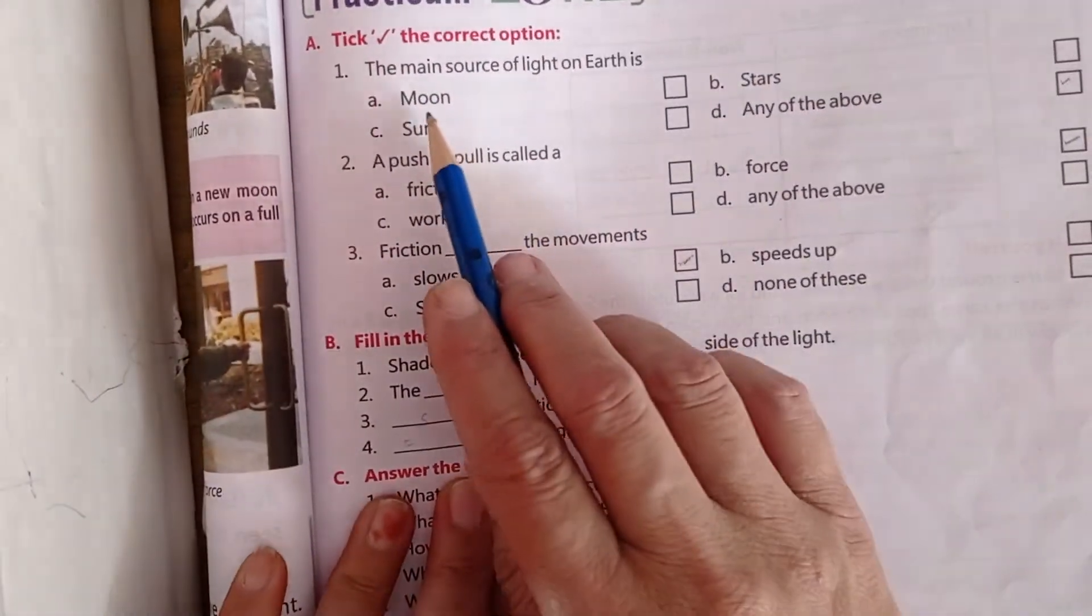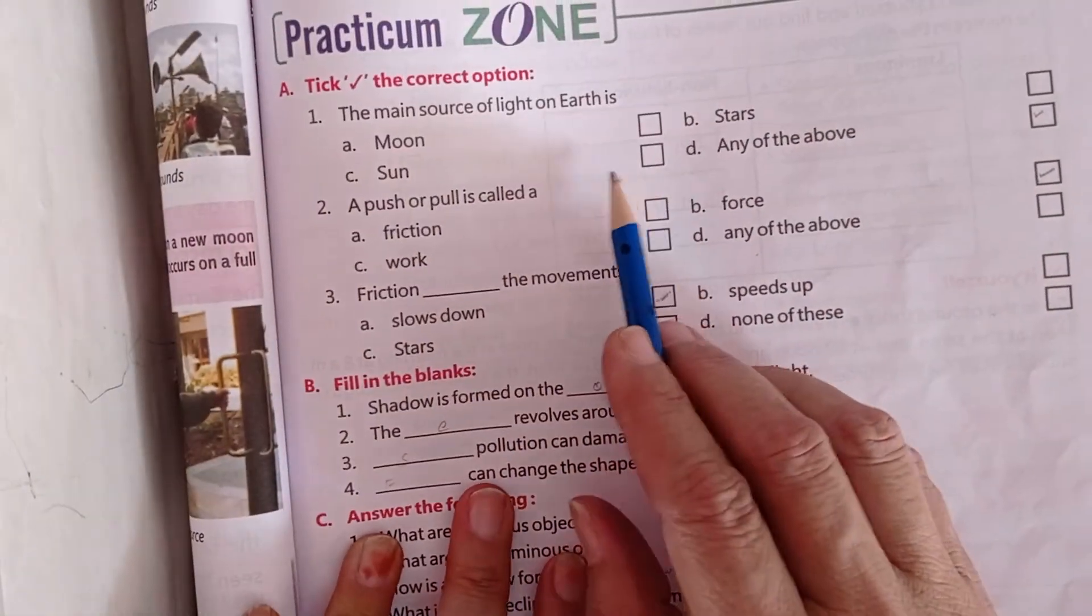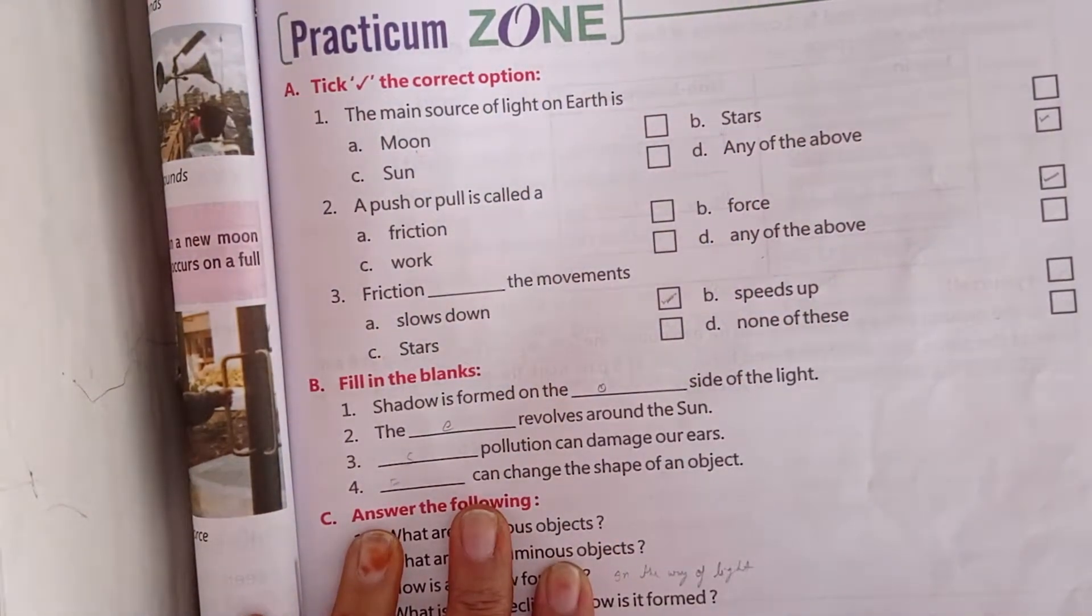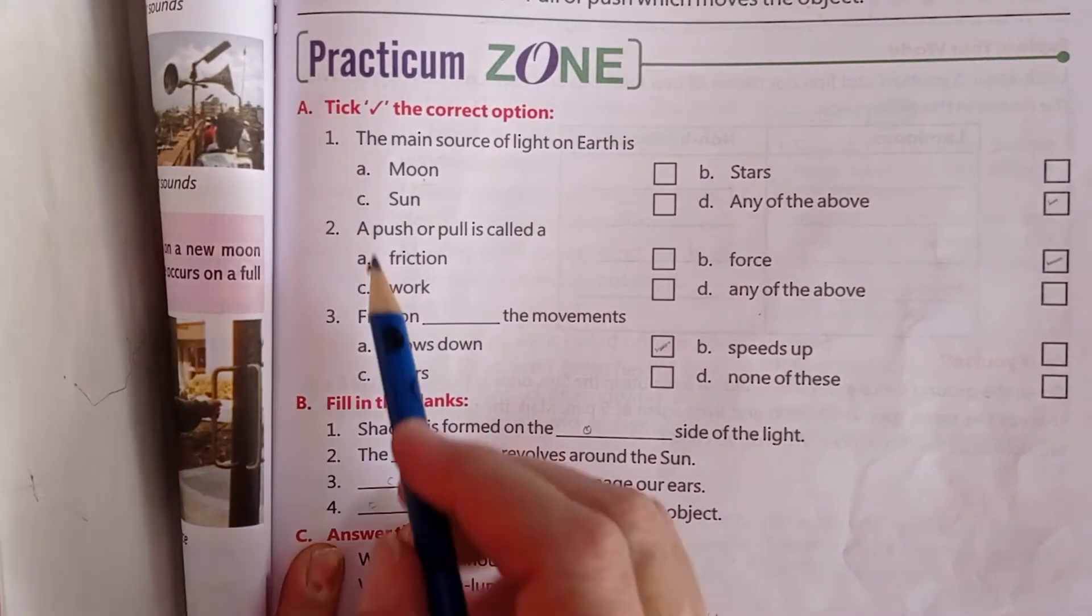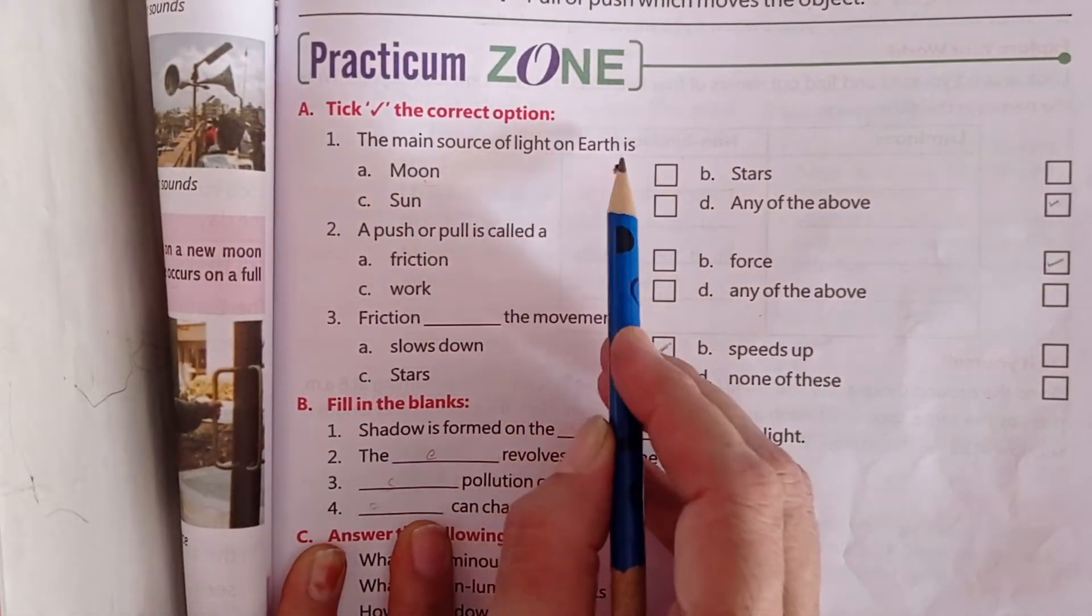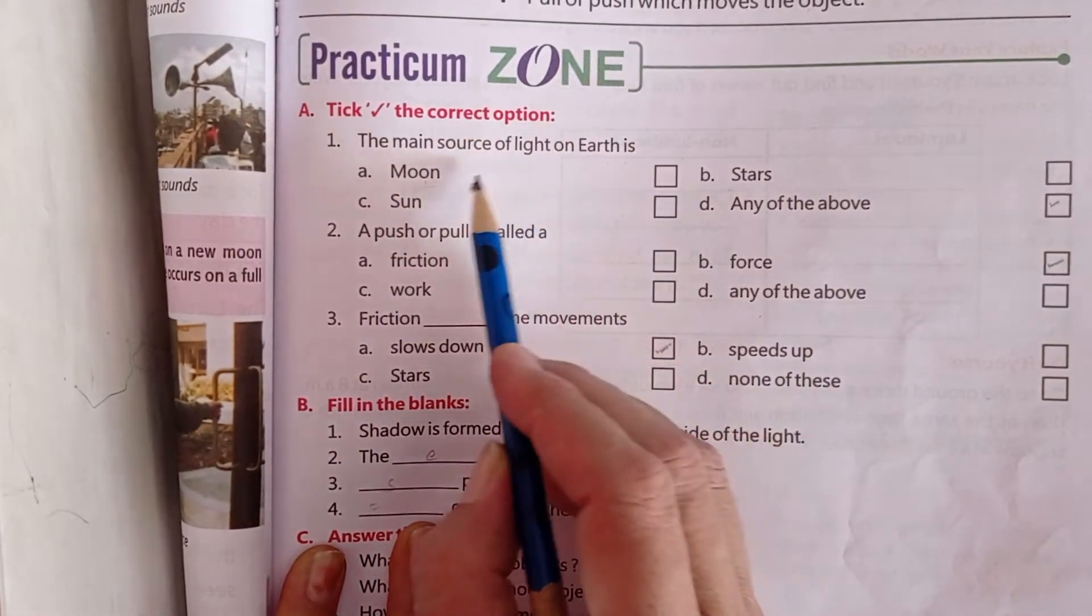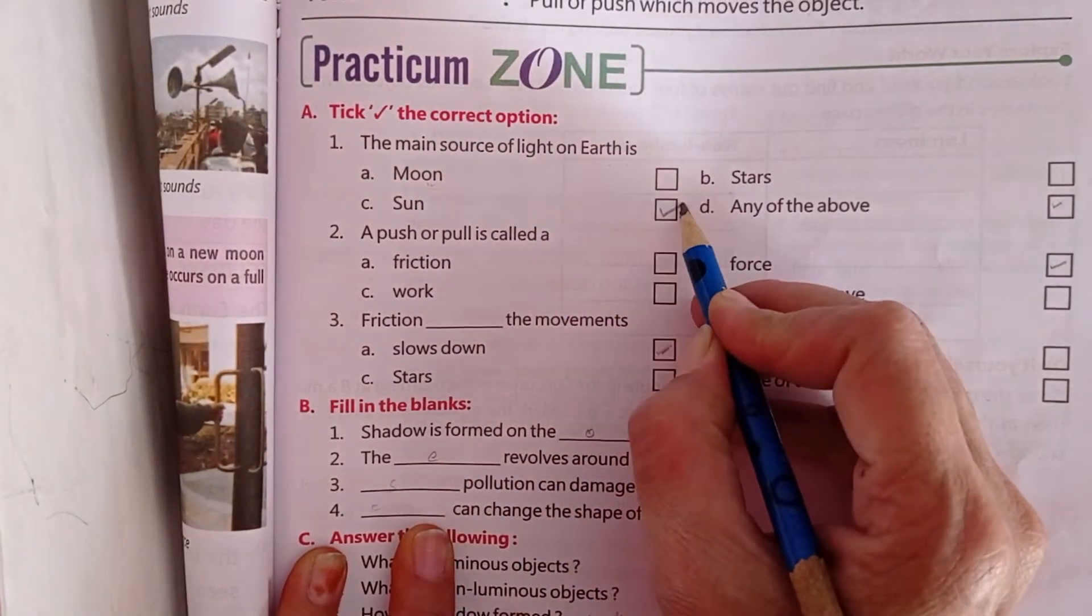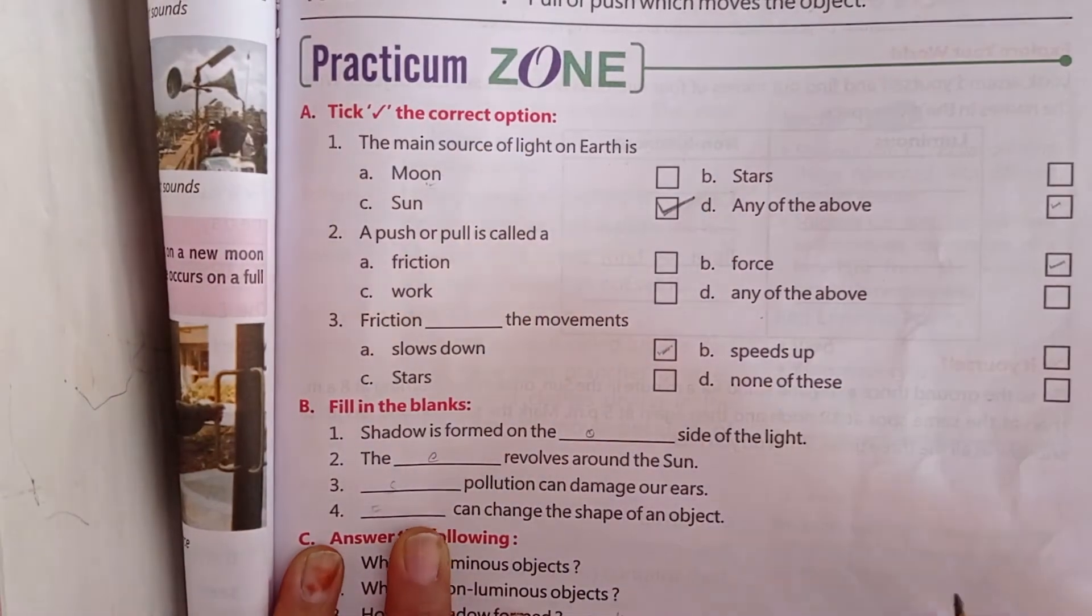Now practice some. The main source of light on the earth is moon, star, or sun. So which is it? What is the main source of light on earth? Is it the moon, star, or sun? The main source of light on earth is the sun.